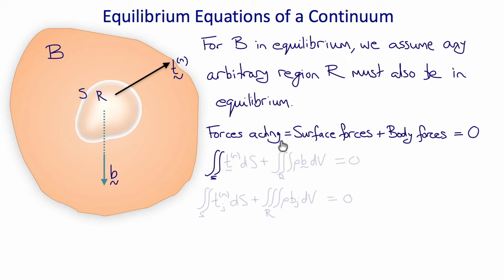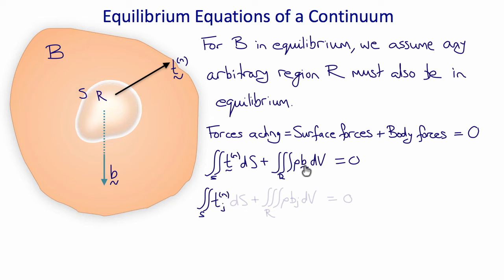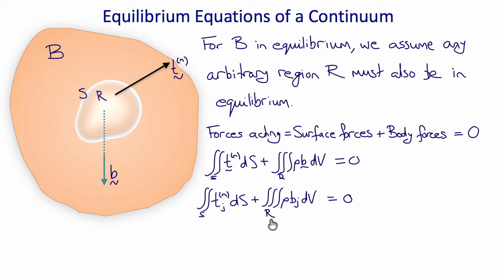The surface forces acting on the region are the double integral over the surface of the tractions T^N with respect to S, plus the triple integral over the volume of rho times B. B is body force per unit mass, so rho times B is body force per unit volume. Writing this in index notation, we obtain the double integral over S of Tj with respect to S, plus the triple integral over R of rho times Bj with respect to volume, equal to zero.